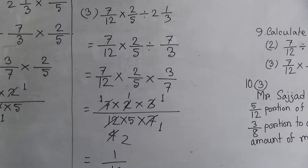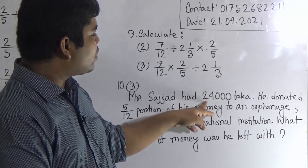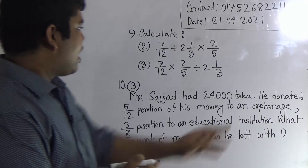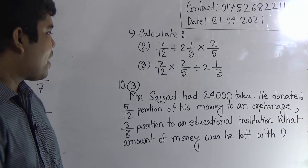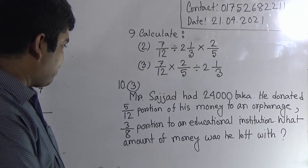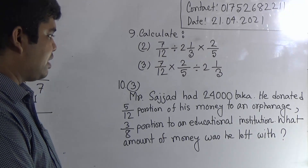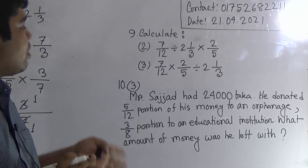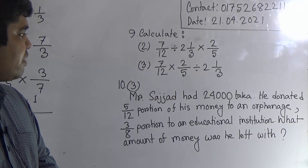Next, we shall solve question number 10. From 10, we shall solve number 3. I have already written that question on the board. At first we read the question. Here: Mr. Sajjad, a person who had 24,000 taka, donated 5/12 portion of his money to an orphanage, then 3/8 portion to an educational institution. What amount of money was left with him? Dear student, this is a word problem, and it is very, very important because based on this, a CBQ problem will be given in your next class.